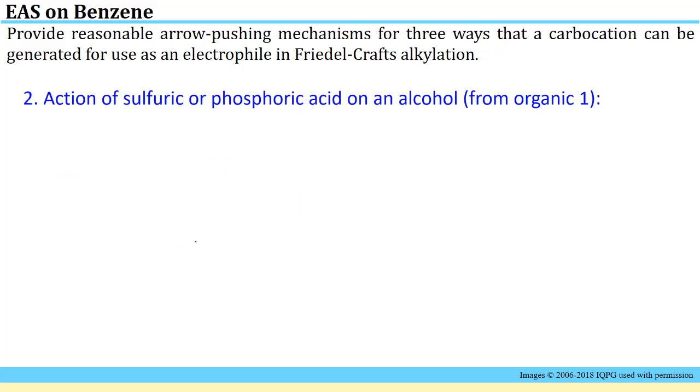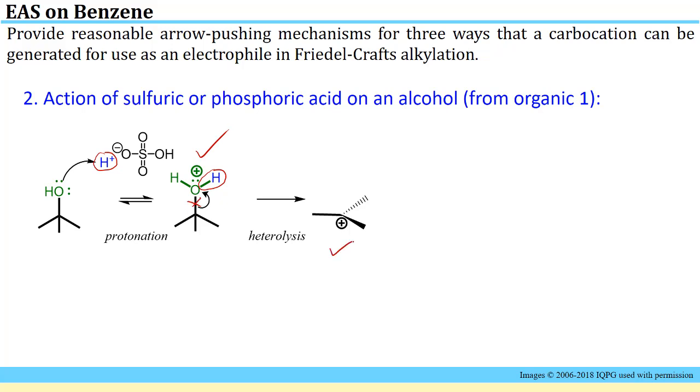Another way that is reviewed in the primer for producing a carbocation is the action of sulfuric or phosphoric acid on an alcohol. We should know this step from organic one as well where you could do substitution or elimination reactions on alcohols from carbocations. In this case if we take the example of sulfuric acid, the proton from the acid will first undergo coordination to the oxygen, and you get this oxonium intermediate. Heterolysis of that carbon-oxygen bond will lead to the formation of a carbocation.